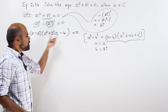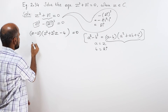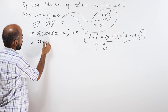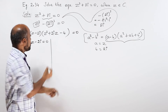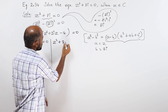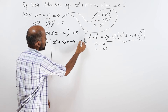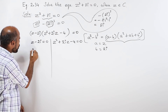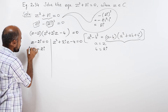We now have 2 factors each equal to 0. First factor: z minus 2i equal to 0, giving z equal to plus 2i. Second factor: z square plus 2iz minus 4 is equal to 0.